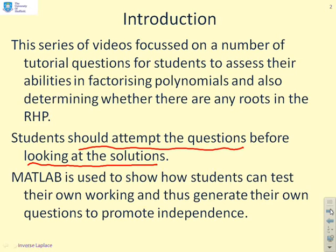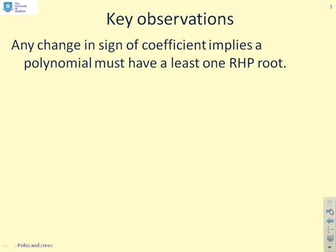The key thing is you try these before you look at the solutions so that you know whether you've got it or not. Now before we start, a few observations that have been covered in the videos that you might want to use. If there is any change in the sign of coefficients, it implies the polynomial must have at least one right half plane root.